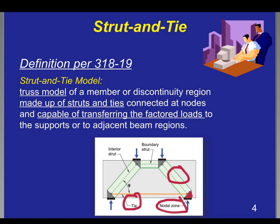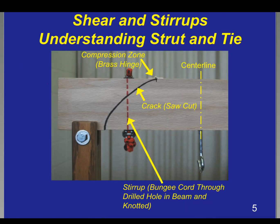We also have different types of compression struts. We can have a boundary strut, which is on the edge of a member, and we can have an interior strut, which is completely inside of a member. Let's talk a little bit about behavior and understanding how shear and stirrups work to better understand strut-and-tie.